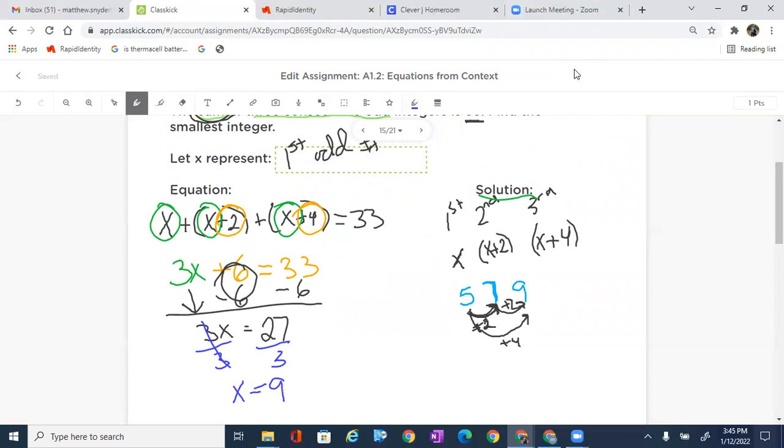That is going to be our first odd integer. So nine, and let's find our next odd integer, which is X plus two, which is nine plus two, which is 11. And what is our next one? Nine plus four, which is 13.